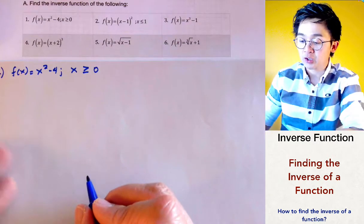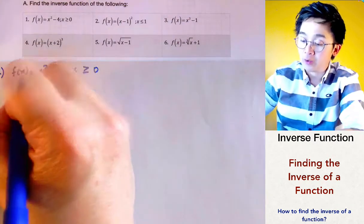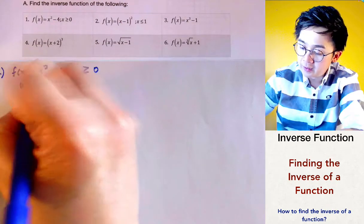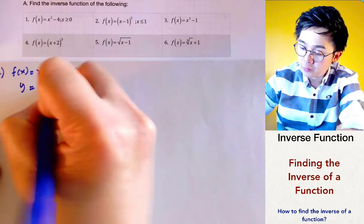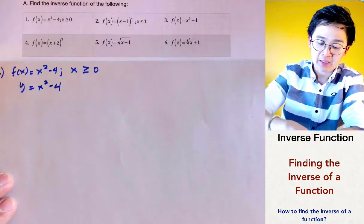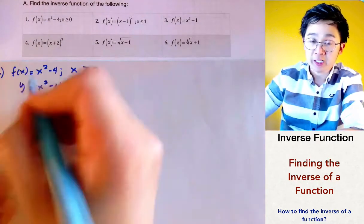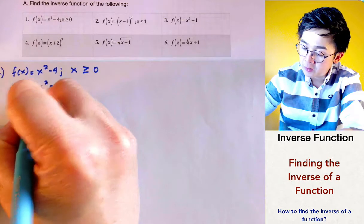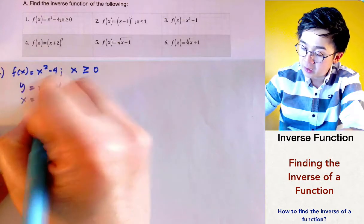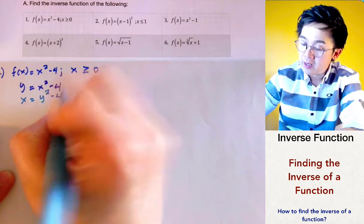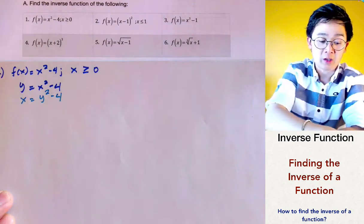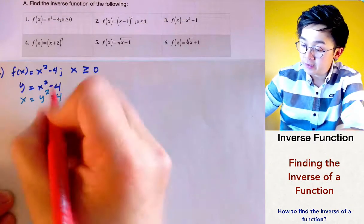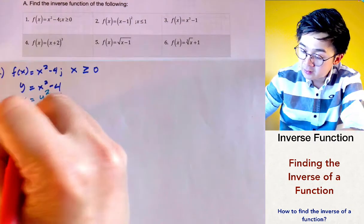The first step is to change the f(x) notation into y = x² - 4. The second step is to interchange the values of x and y, so x becomes y and y becomes x. Then we're going to solve for the value of y, so we'll add 4 on both sides.